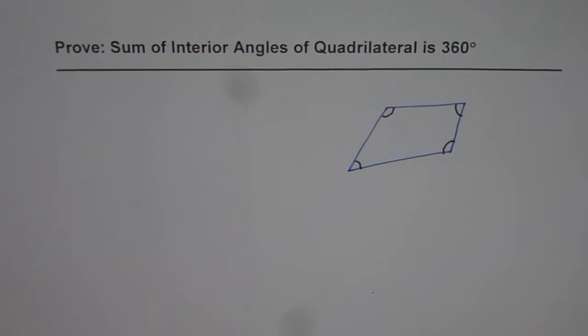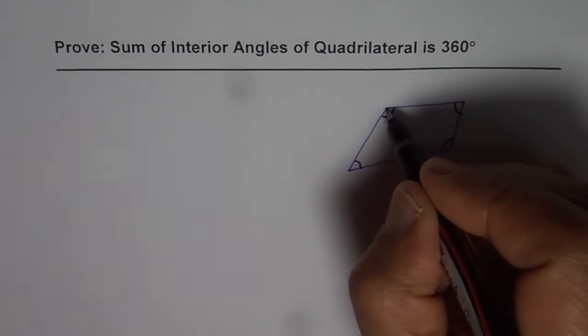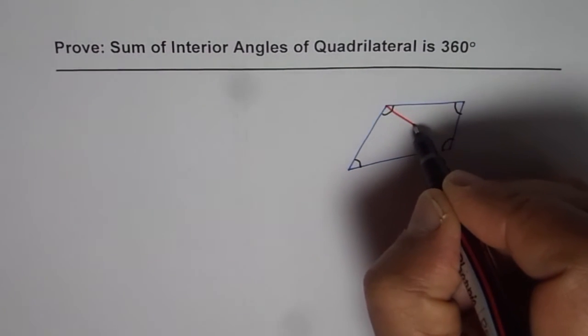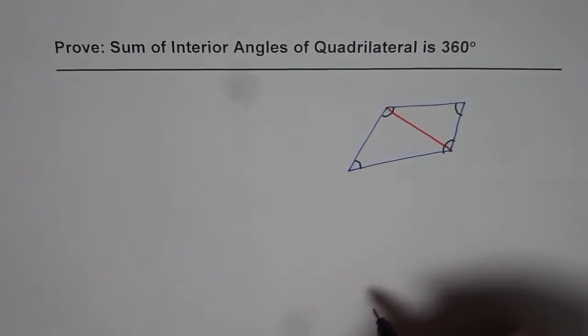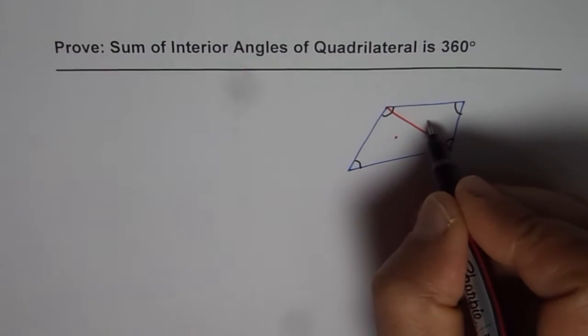The easy way to do it is divide this quadrilateral by joining any two opposite vertices. So once you do that, you get two triangles.